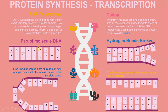RNA nucleotides slot into place next to their complementary bases on the DNA. The enzyme RNA polymerase links them together through sugar and phosphate groups to form a long chain of RNA nucleotides — the mRNA molecule. The mRNA molecule contains a complementary sequence of bases to those on the template strand of the DNA. Each triplet on DNA is represented by a complementary group of three bases on mRNA, called a codon.